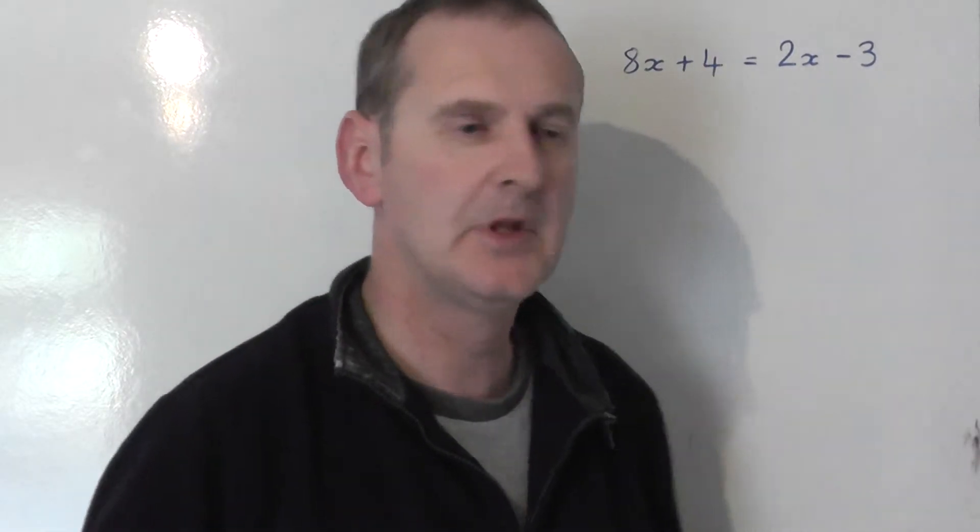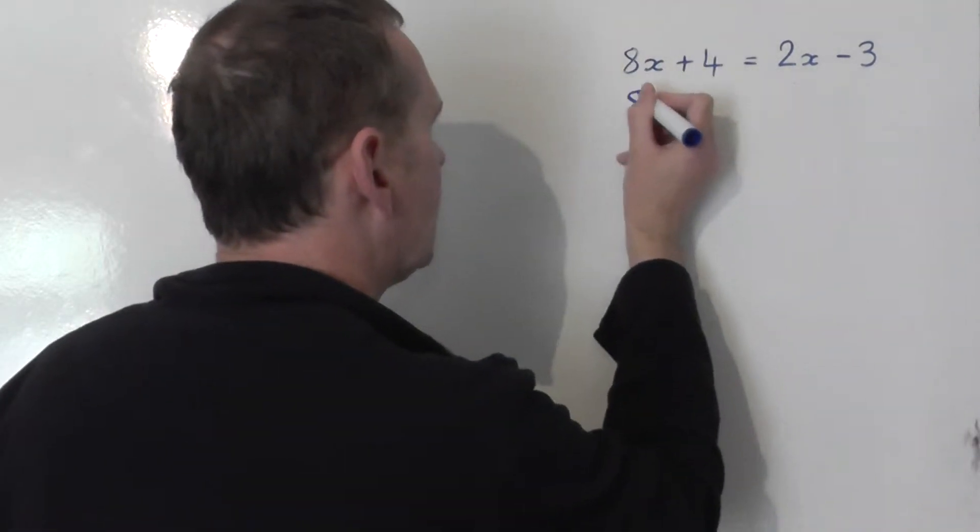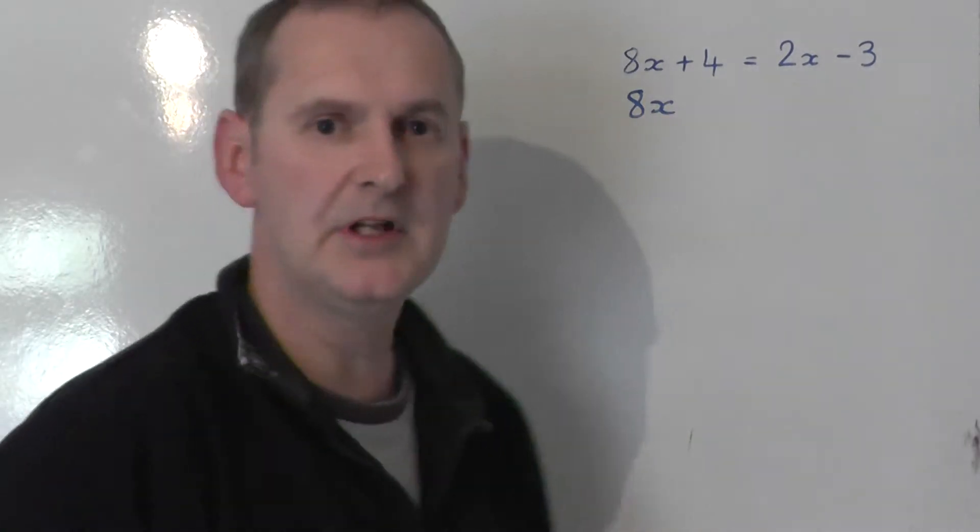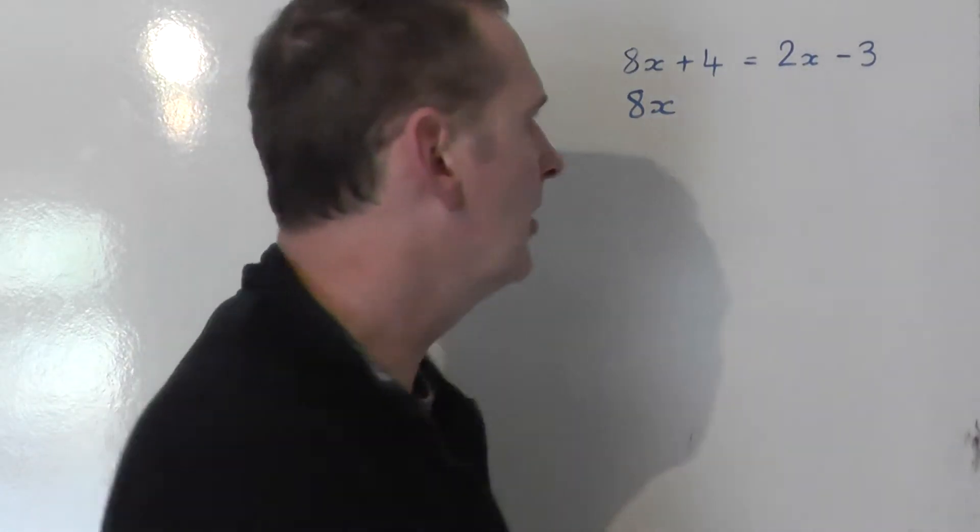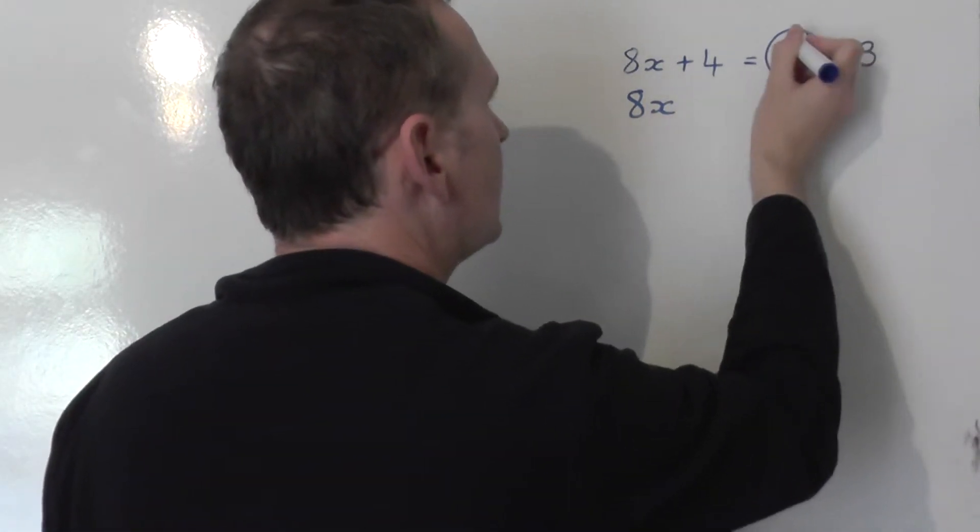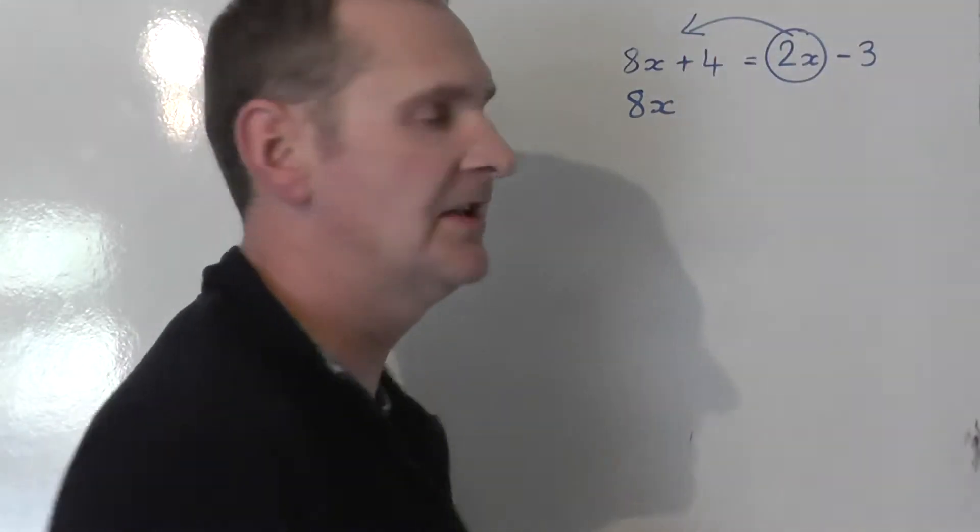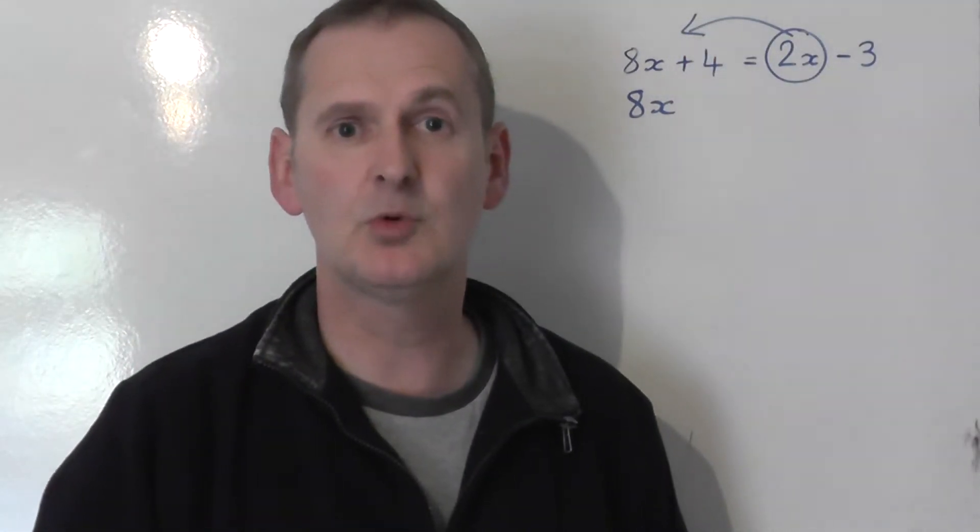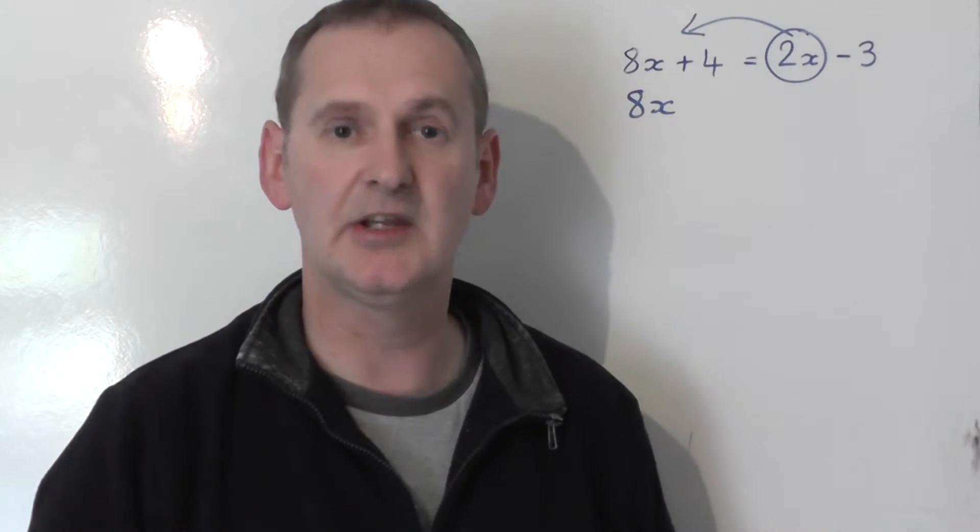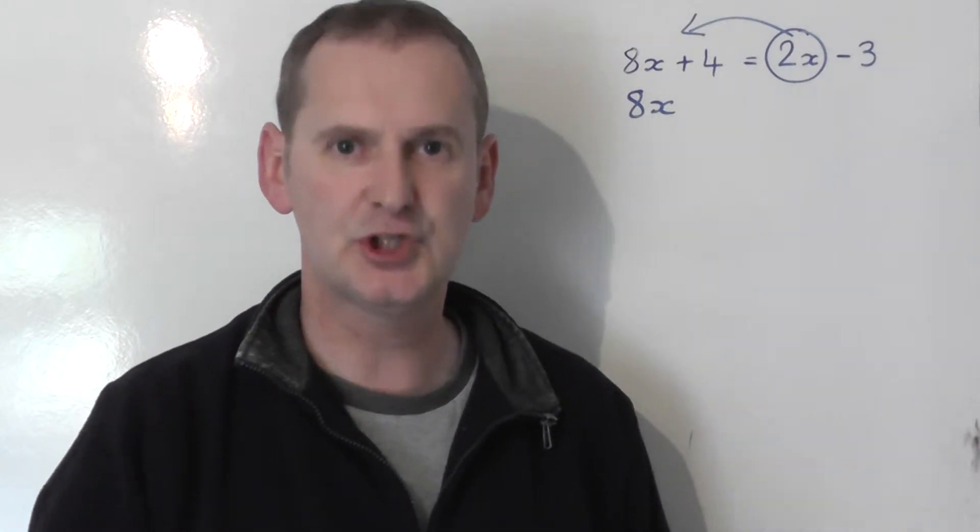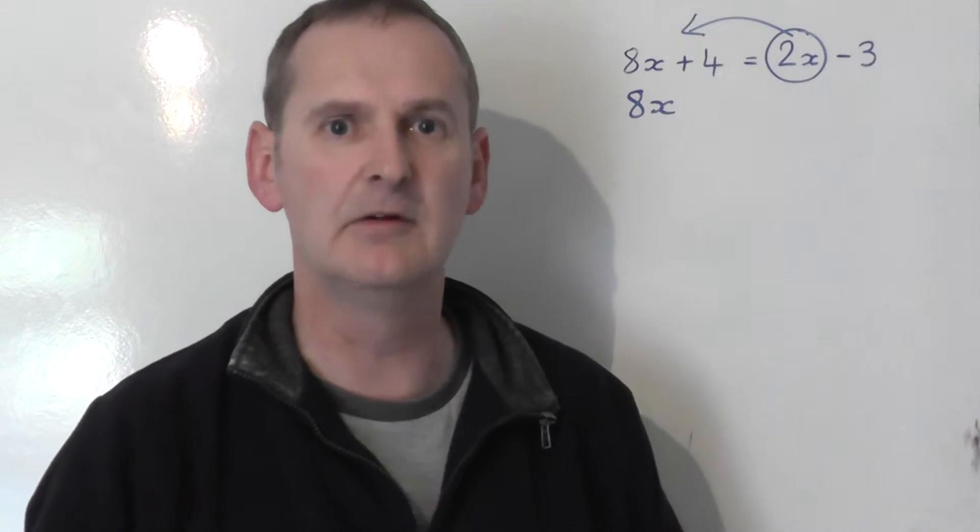So I'm going to collect the x's on the left. The 8x stays exactly where it is on the left-hand side, I don't need to move that at all. The 2x needs to be dragged across from the right-hand side to the left-hand side, and because it swaps sides, it changes signs. So the whole 2x, the 2 plus the x together, the whole 2x is taken over.